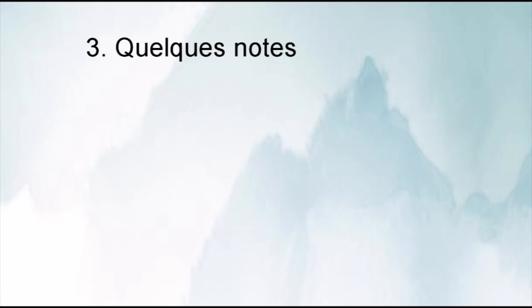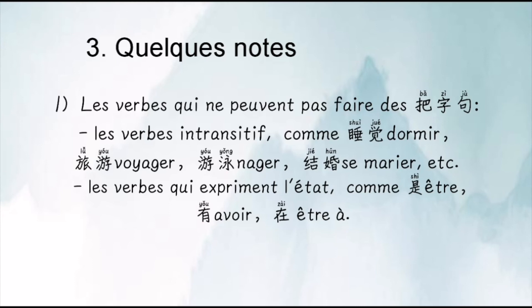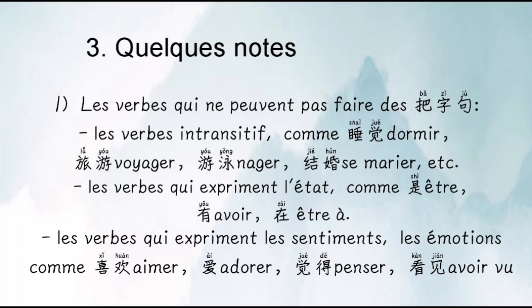Il y a quelques points importants à retenir quand vous employez les phrases BA ZI JU ou BEI ZI JU. Le premier point, c'est que tous les verbes ne peuvent pas être utilisés pour faire des BA ZI JU. Parmi les premières catégories, des verbes intransitifs ne peuvent pas être utilisés. Ensuite, deuxième catégorie, des verbes qui expriment l'état comme SHI (être), YOU (avoir), ou ZAI (être à). Troisième groupe de verbes, c'est des verbes qui expriment les émotions et les sentiments psychologiques, par exemple 喜欢, AI, 觉得, KANJIAN, etc.